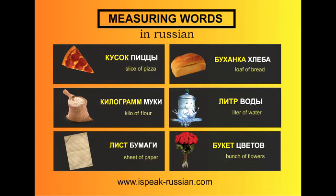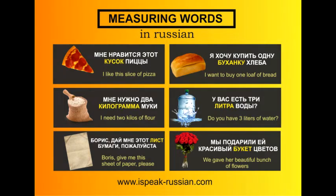Now some examples with these words. Мне нравится этот кусок пиццы. — I like this slice of pizza. Я хочу купить одну буханку хлеба. — I want to buy one loaf of bread. Мне нужно два килограмма муки. — I need two kilos of flour. У вас есть три литра воды? — Do you have three liters of water?